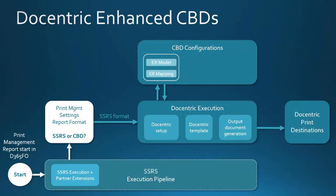To repeat the image from the previous slide but focusing on Docentric Enhanced Configurable Business Documents: if you want to implement everything without development, but at the same time be productive while doing it, and benefit from all the Docentric improvements to D365 — in particular to print destinations — then this is the solution. Notice that this is possible only with Docentric full version, because these models go hand in hand with Docentric templates. You won't be able to execute the models and then bypass our document generation to reach our improved print destinations. So if you want to benefit from all of this, you will need our full version.